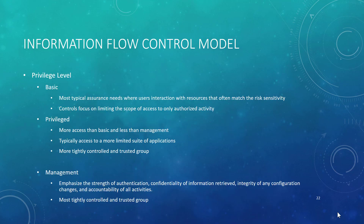Finally, what type of interactions are taking place? Is it basic, privileged, or management? Starting at the bottom, management is the most tightly controlled and the most trusted group. Privileged is in between — more tightly controlled than basic and is a trusted group. At the basic level, you're going to limit the scope of access to only authorized activity.